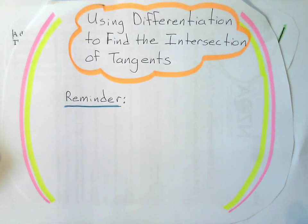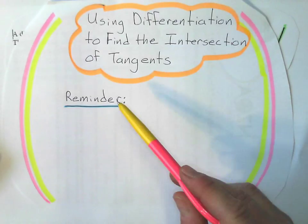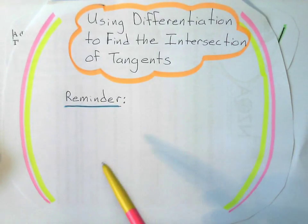Alright, what we're going to do is we're going to be using differentiation to find the intersection of tangents. And there's a couple of things we need to remember here.